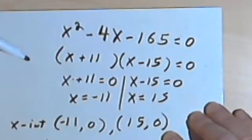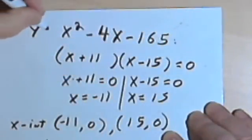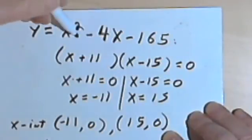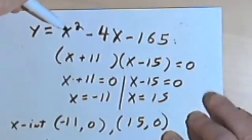I'm also going to need the y-intercept, and that's very easy to find. Let's take this original, let's take this equation and set it back so it's equal to y. The y-intercept happens when x is 0. So if x is 0,